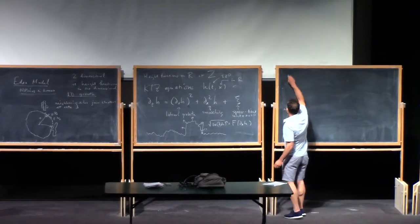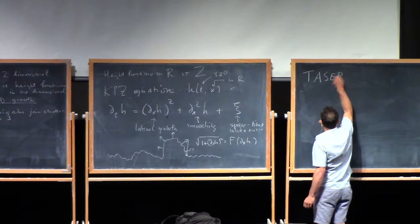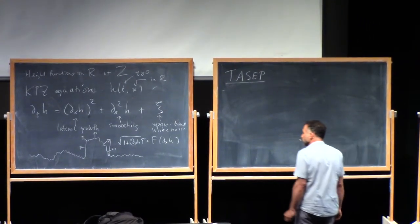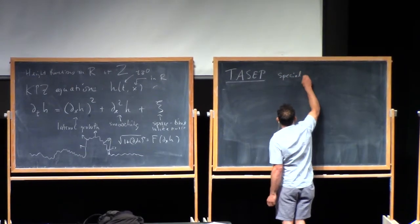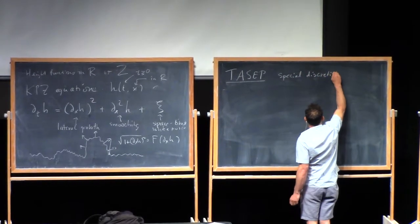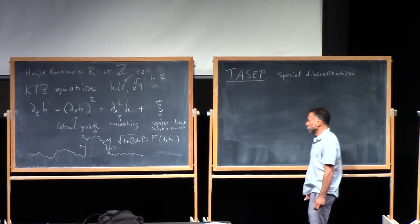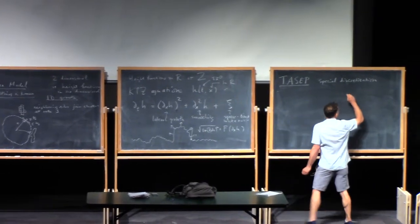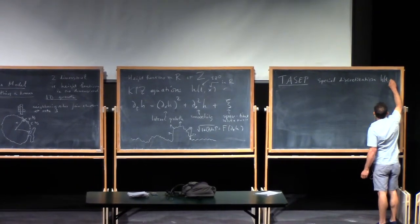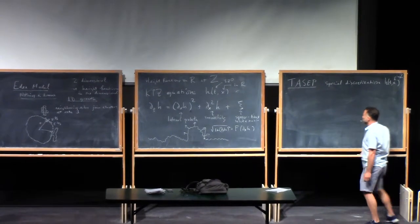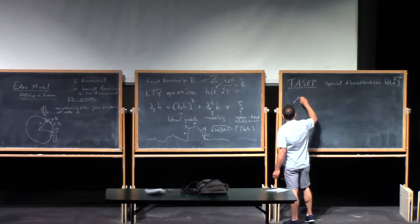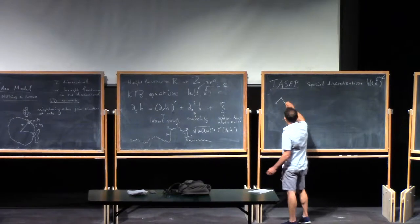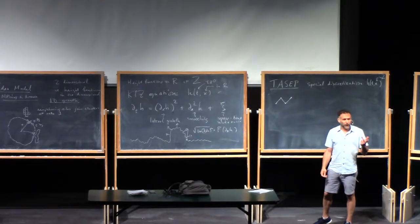The model we'll be talking about a lot is called TASEP. TASEP is a very special discretization of the KPZ equation. The height function, instead of just being a real function, is on ℤ. So H(t, x) with x in ℤ. The height function will just look like a random walk path — it goes up or down by one at each step.